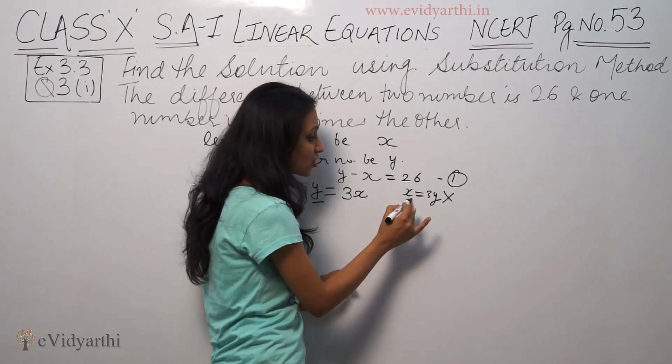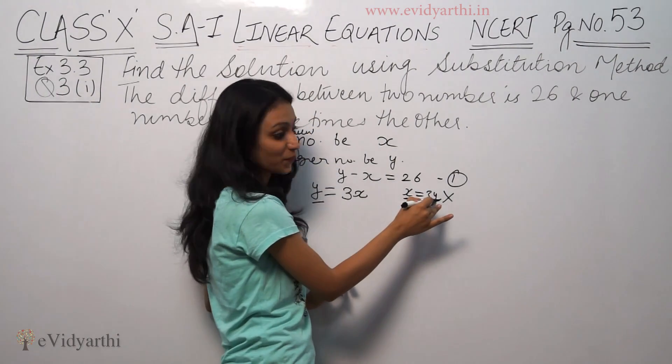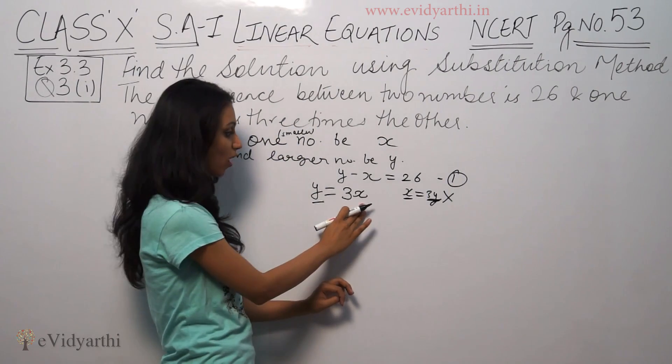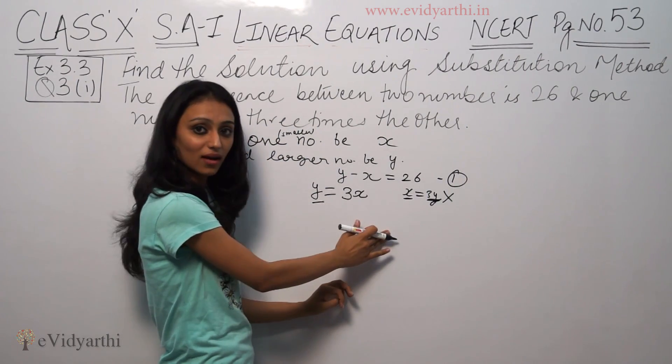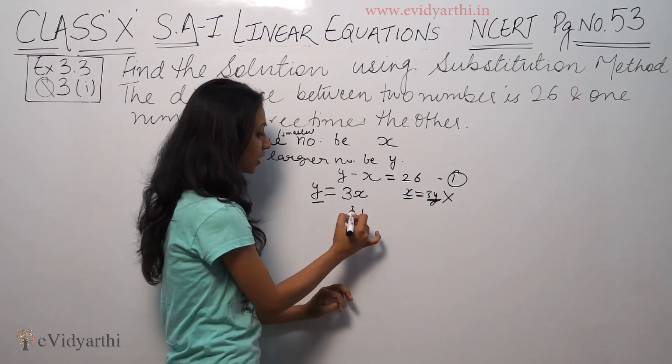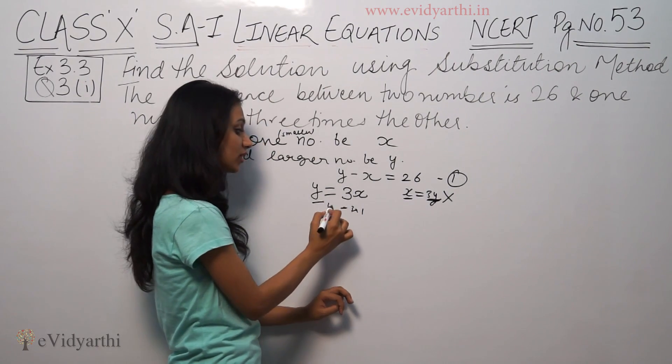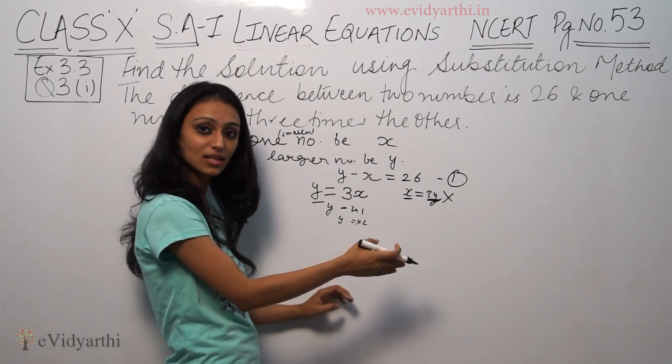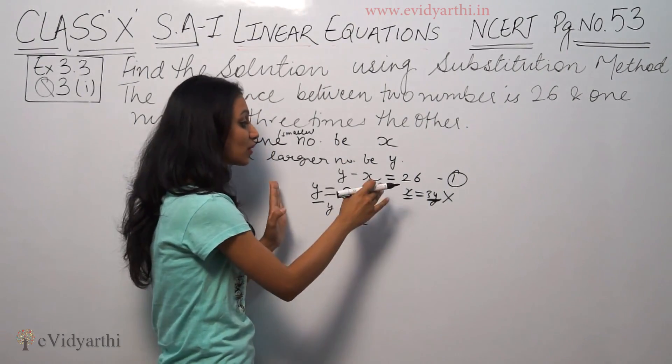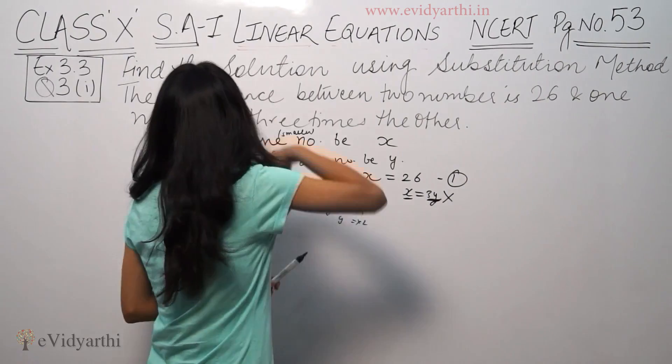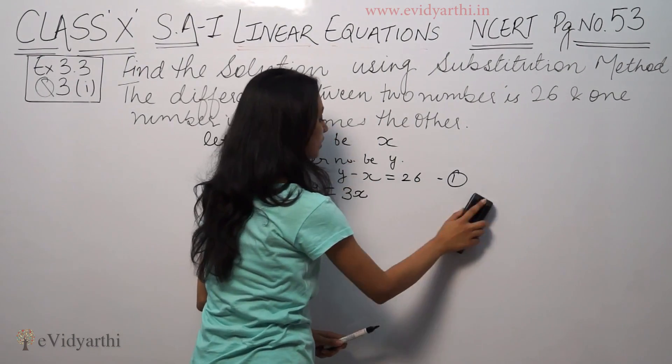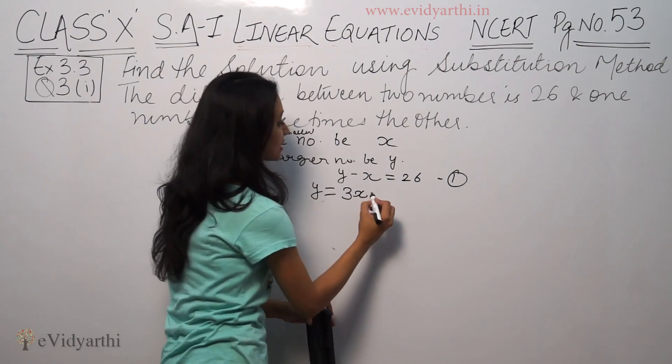If this number is 1, then the value is 3. If this number is 2, then the value is 6. So our second equation is y equal to 3x. This is our second equation.